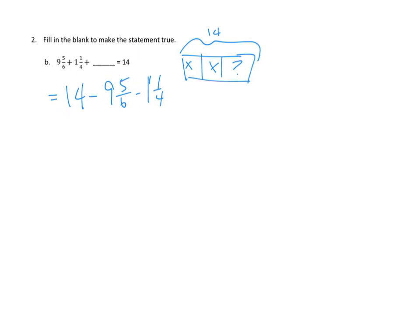Let's see how we can solve this. In the past we've gone ahead and we've taken our whole units first. So 14 minus 9 minus 1, that's 14 minus 10, so that's 4. And then we have to subtract 5 sixths, and then we have to subtract 1 fourth. Now, there are a whole bunch of different ways we can solve this. I'm going to go with the way that I think is the easiest for me, which is I am a little bit perplexed that we have two different fractions with different denominators.